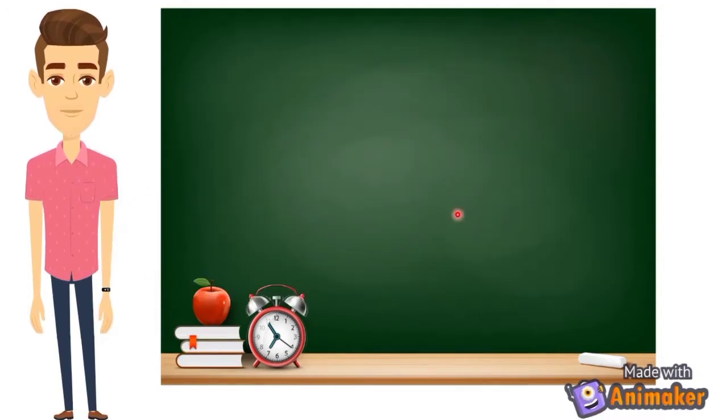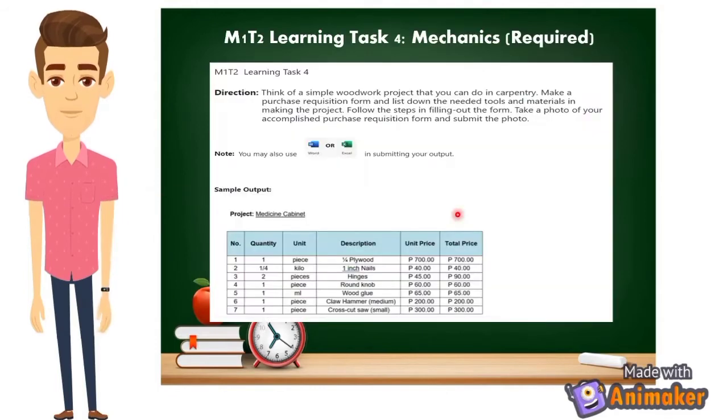For the next activity, mechanics, learning task number 4, all you have to do is to make your own requisition form. For the direction, think of a simple woodwork project that you can do in carpentry. Make a purchase requisition form and list down the needed tools and materials in ending the project. Follow the steps in filling out the form. Take a photo of the accomplished purchase requisition form and submit the photo.